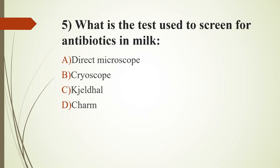Fifth question: what is the test used to screen for antibiotics in milk? Option A, direct microscope; option B, cryoscope; option C, Kjeldahl test; option D, charm test. The answer is option D, charm test. Antibiotic tests can be classified into two: screening test and confirmatory test. The charm test is a beta-lactam dip test which detects beta-lactam drugs in raw milk. The test follows a one-step procedure — simply dip the strip into the sample and visually interpret within minutes.